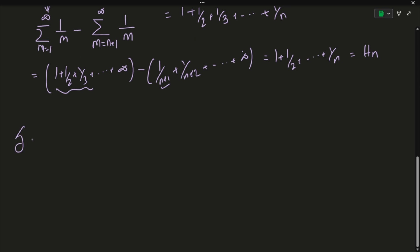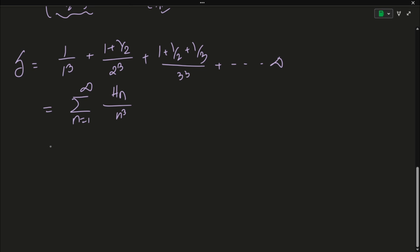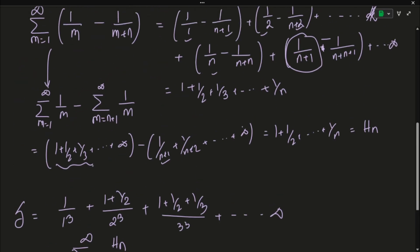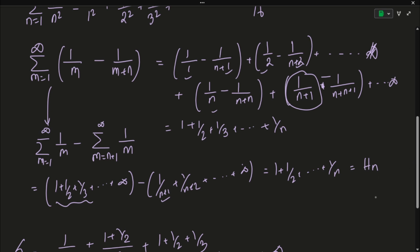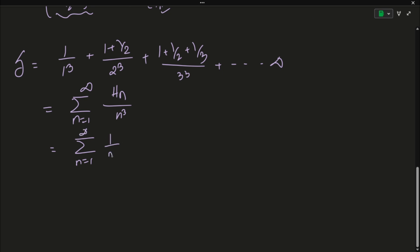Let us name our actual summation as S: 1/1³ + (1 + 1/2)/2³ + (1 + 1/2 + 1/3)/3³ + ... We can write this in summation notation as the sum from n=1 to infinity of H_n/n³. Now we make use of the representation we just derived, writing H_n as the infinite series: the sum from m=1 to infinity of (1/m − 1/(m+n)).